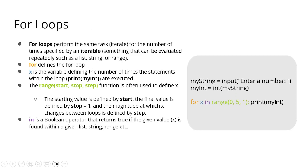After if-else statements, we have for loops. For loops perform the same task or iterate for a number of times specified by an iterable — something that can be evaluated repeatedly such as a list, string, or range. 'for' defines the for loop. x is the variable defining the number of times the statements within the loop are executed. The range(start, stop, step) — for example range(0, 5, 1) — will print 0, 1, 2, 3, 4. The stop value is stop minus 1, so range(0, 5, 1) ends at 4.